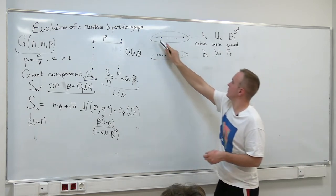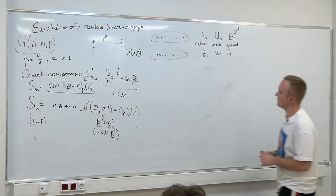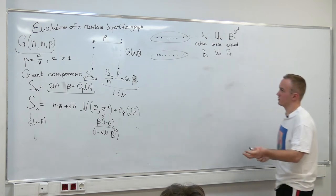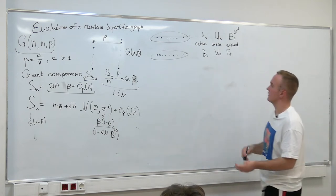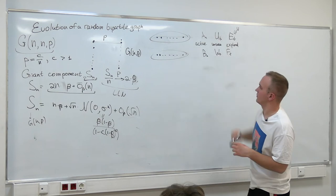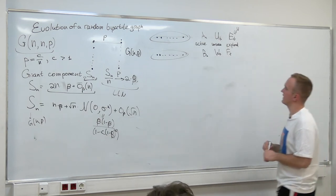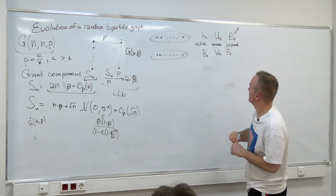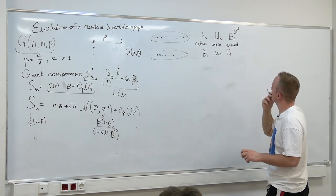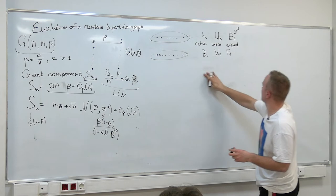First of all, all vertices are unseen. Then we take the first unseen vertex and put it into the active set. So right now we have one active vertex.